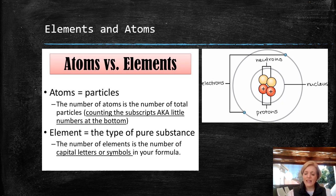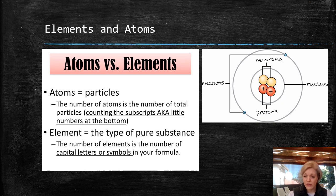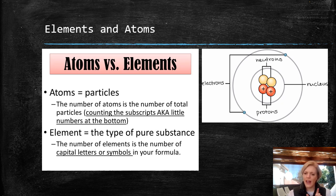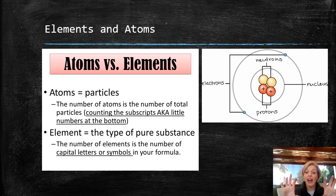An element is a type of pure substance. That element — that type of particle — only exists in that form for that particular element; there aren't any other forms. The number of elements is the number of capital letters or symbols in a formula. Think about table salt — table salt is NaCl. Na is sodium; that is your chemical symbol, that is the element. Cl is chlorine. Sodium and chlorine are bonded together to form table salt — two different elements chemically bonded together to form a compound.